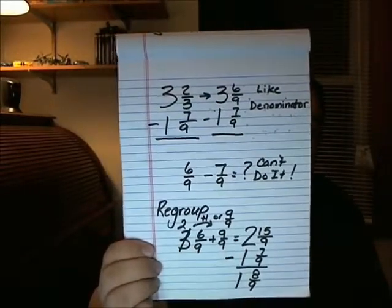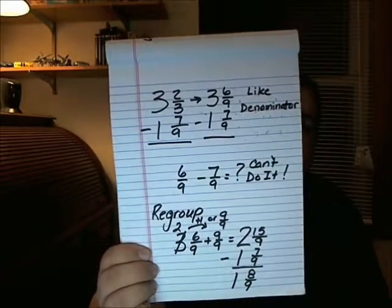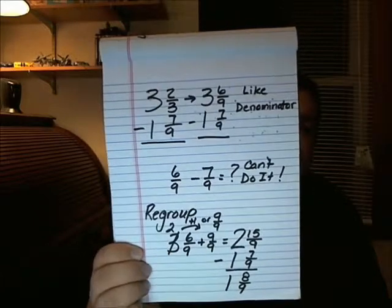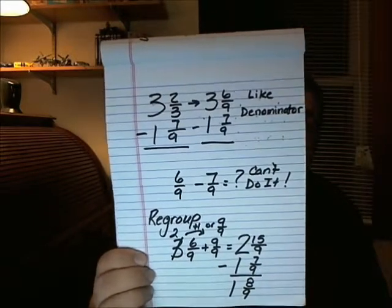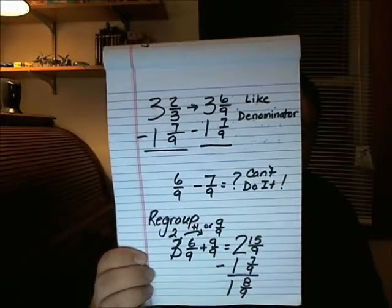When we do create that equivalent fraction for the 3 and 2 thirds, you'll notice that all I get is 6 ninths. Well, this creates a problem. When we are subtracting fractions, especially mixed numbers, we take care of the fraction first. We can't do the whole numbers and then just finish up with the fractions. It's just like when you're working any other subtraction problem — we always start with the smallest place value and work our way up. We do the same thing with fractions and whole numbers; we start with the smallest value, which is the fraction. Since 6 ninths minus 7 ninths I can't do, that means I need to regroup, just like I would in a normal subtraction problem.